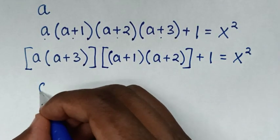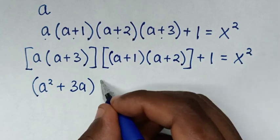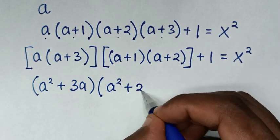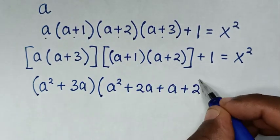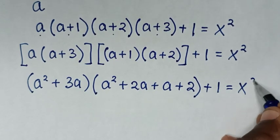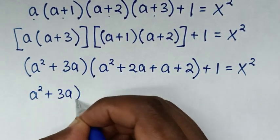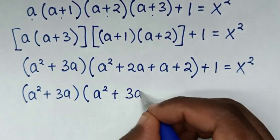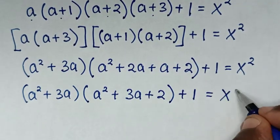Then in the next step, expanding: a times a is a², plus a times 3 is 3a; then a times a is a², plus a times 2 is 2a, plus a is 3a, then plus 2. Plus 1 is equal to x squared.